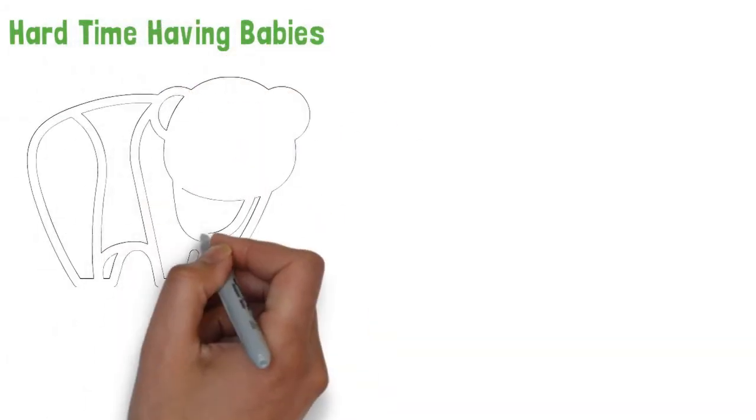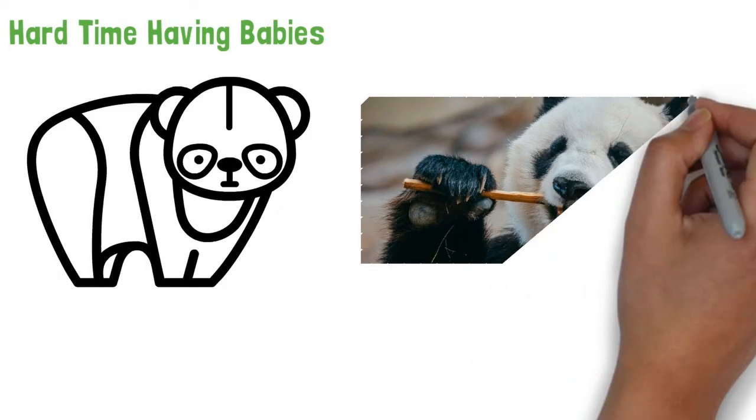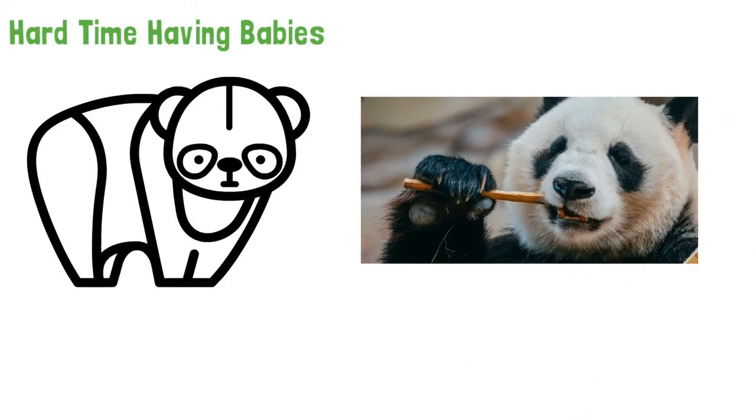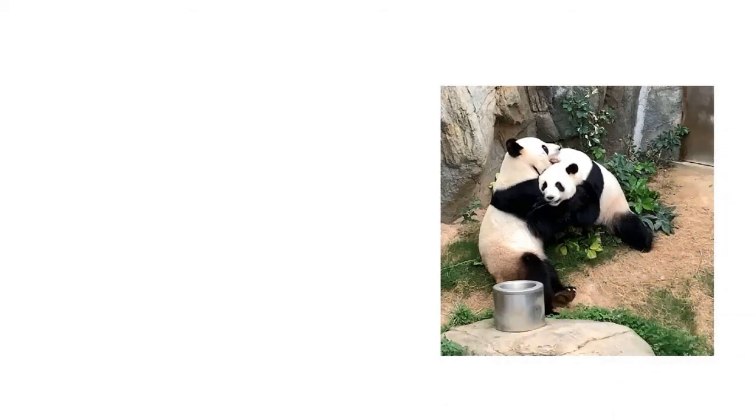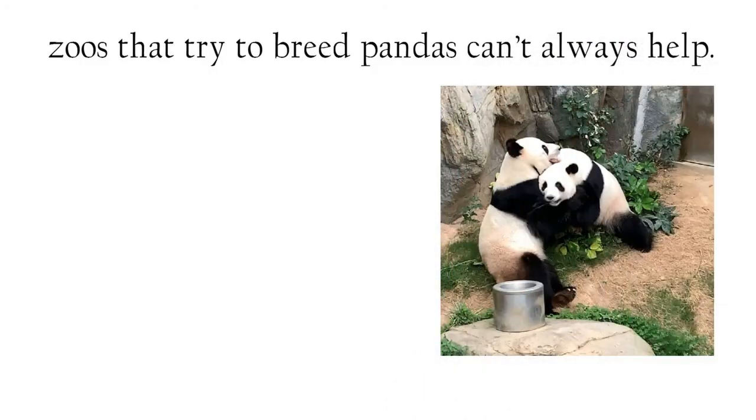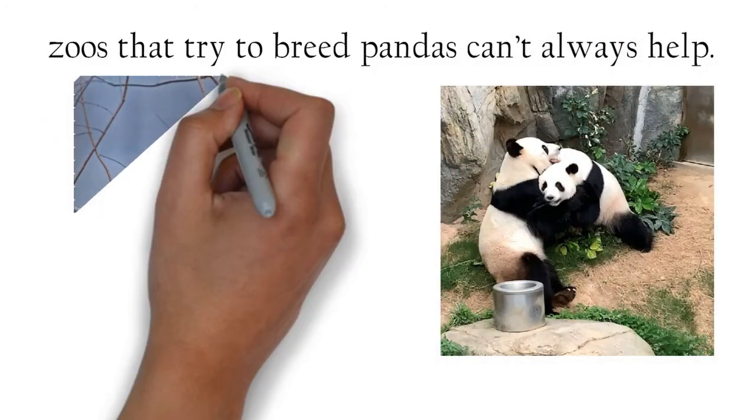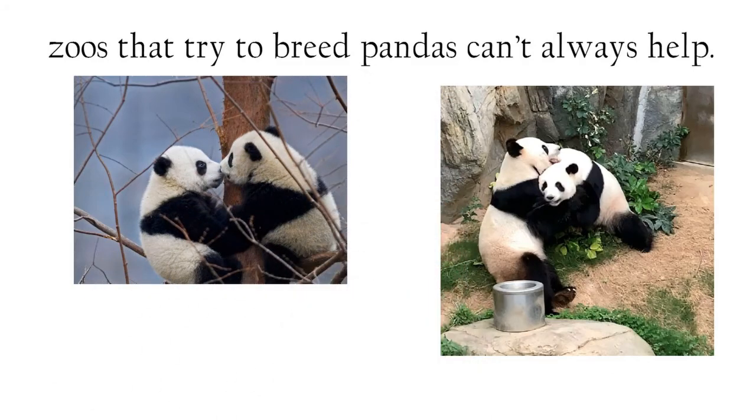Hard time having babies. Pandas have a hard time having babies. Basically, pandas have only one to three cubs at a time. Then, only one cub will live to be an adult. Sadly, bamboo has low nutrients, so it's hard for a panda to have enough food while it's pregnant. Also, pandas are picky about who they'll mate with. So, zoos that try to breed pandas can't always help. This is because the two pandas they find need to like each other. If the pandas don't like each other, they will fight instead of making more panda babies. This is unlike other animal species, which are much less picky.